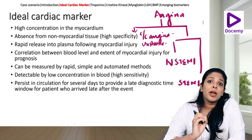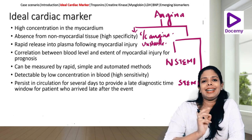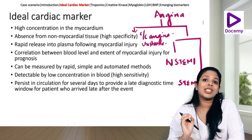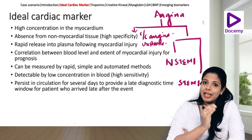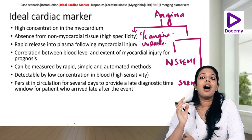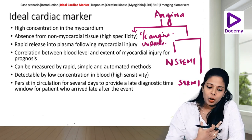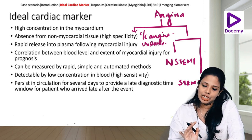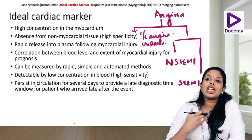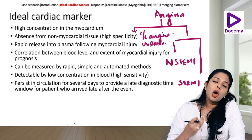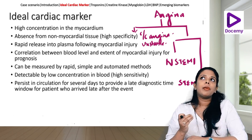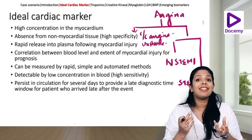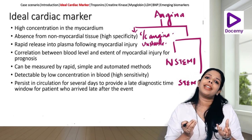What do you understand by the ideal cardiac biomarker? The ideal cardiac biomarker should be present in high concentration in the myocardium and should not be present anywhere else — absent from non-myocardial tissues. It should be able to rapidly release into the plasma once there is myocardial injury, and we should always be able to correlate the extent of injury with the level of increase in the cardiac biomarker.